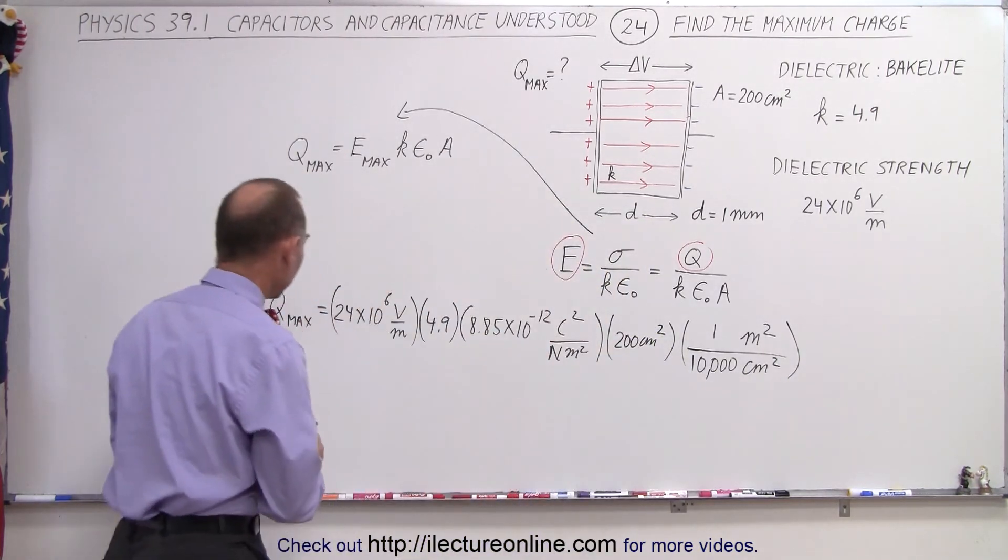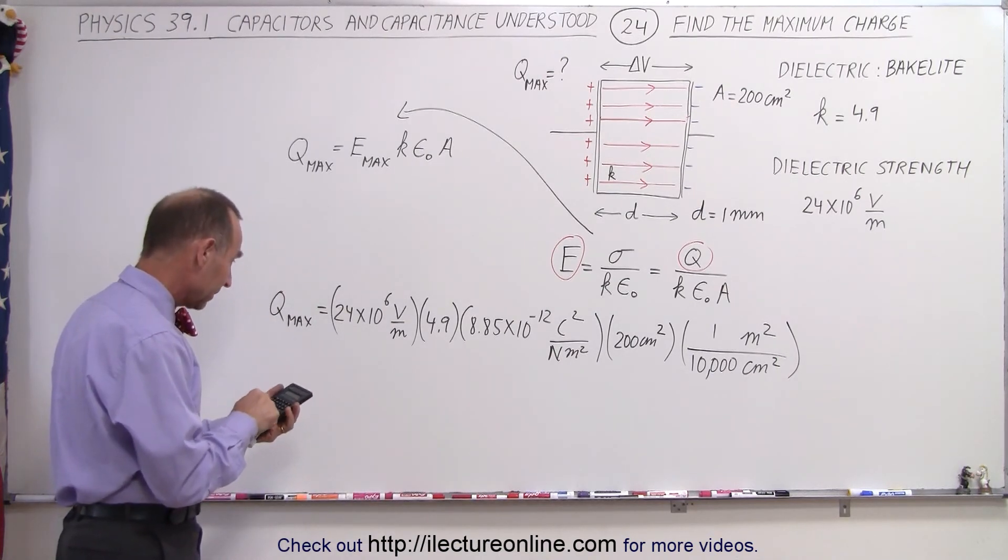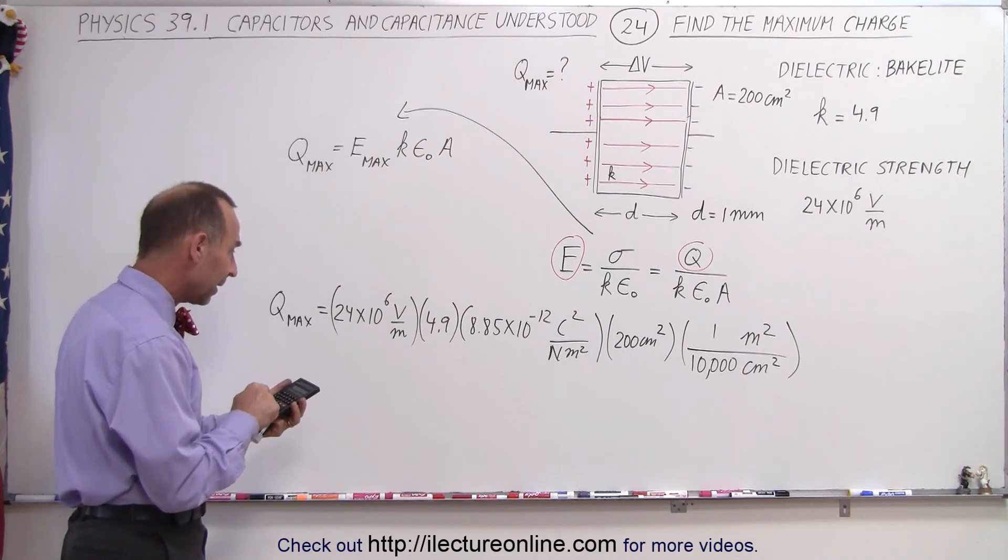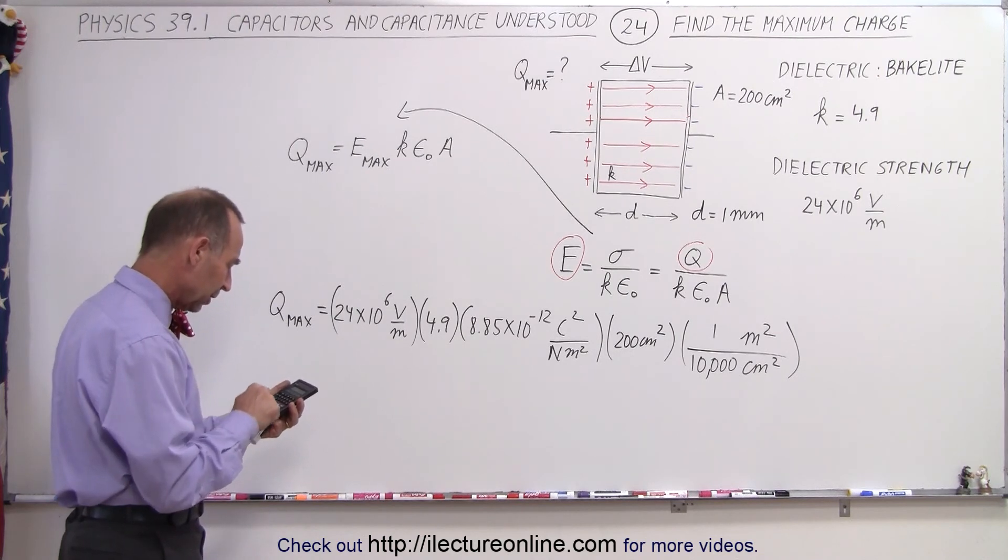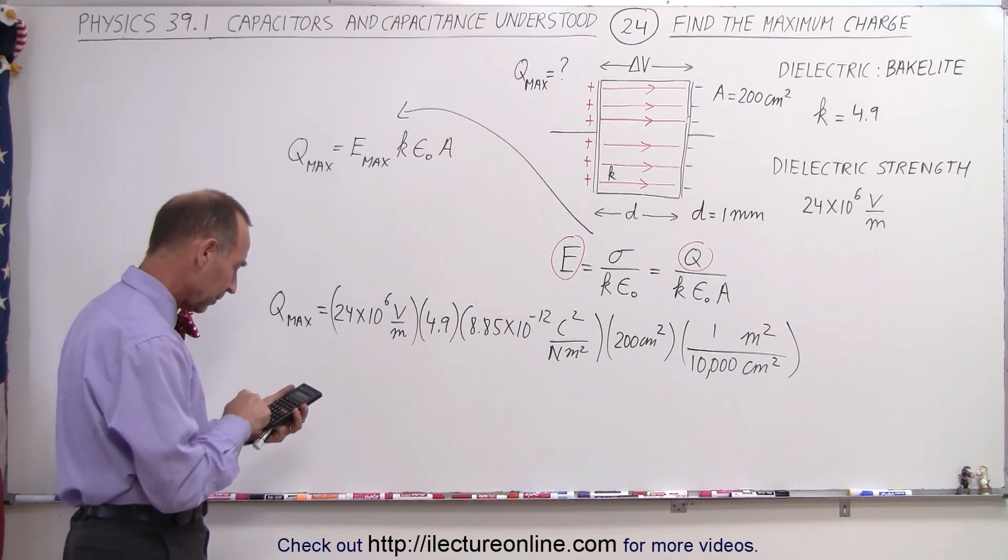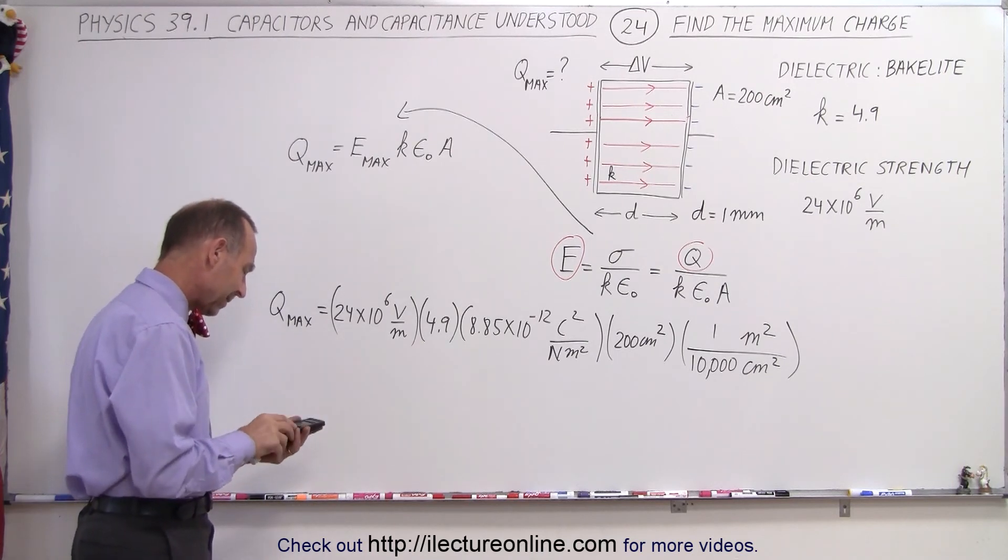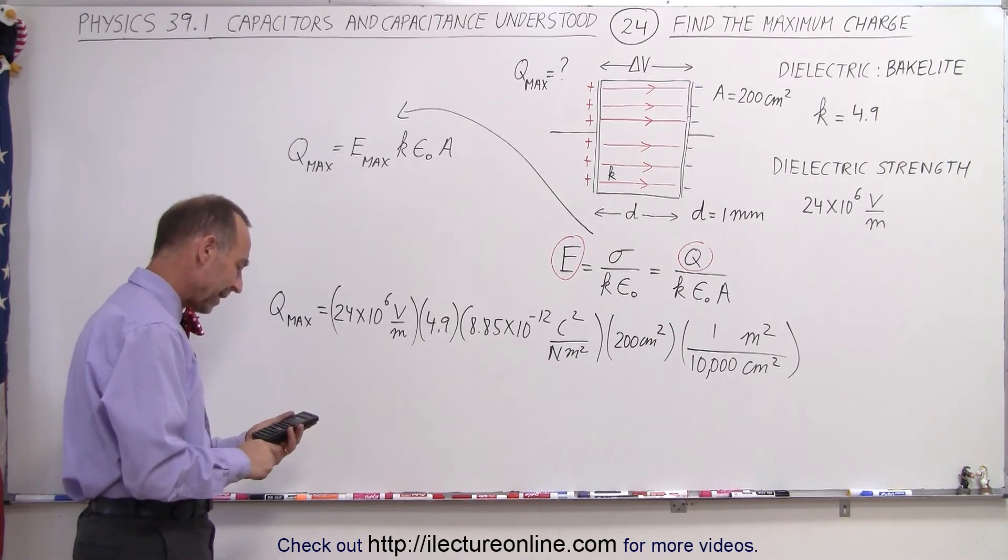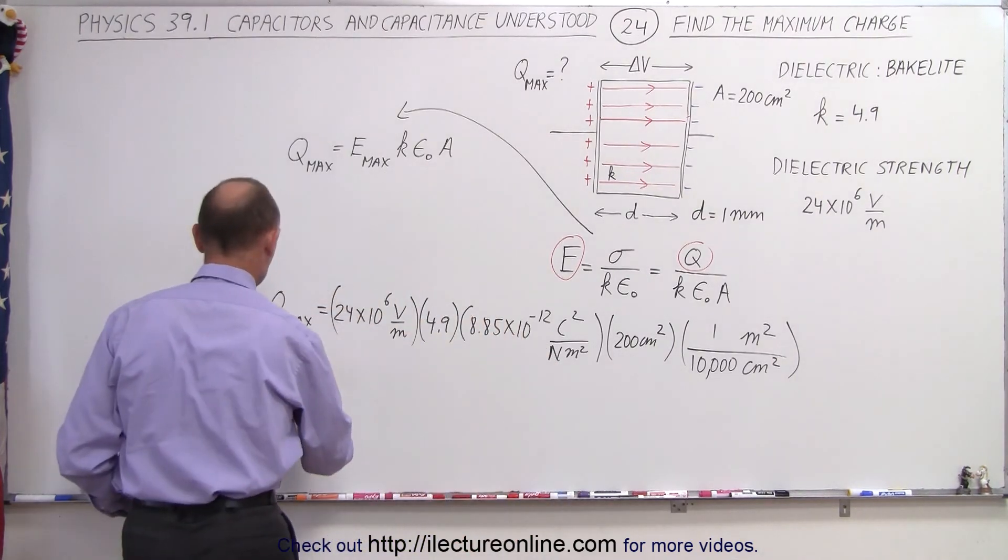So let's go ahead and see what we end up with here. So let's do the minus 10 to the minus nine to the minus six to the minus five coulombs, times 200 divided by 10,000 equals, it looks like 2.08 times 10 to the minus five coulombs. 2.08 so that would be Q max